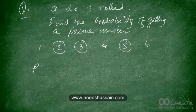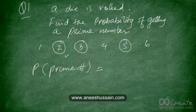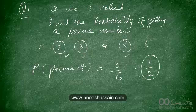So the probability of getting a prime number is going to be equal to the number of favorable outcomes — that's 3 — out of all possible outcomes, which are 6. That turns out to be exactly 1 out of 2.